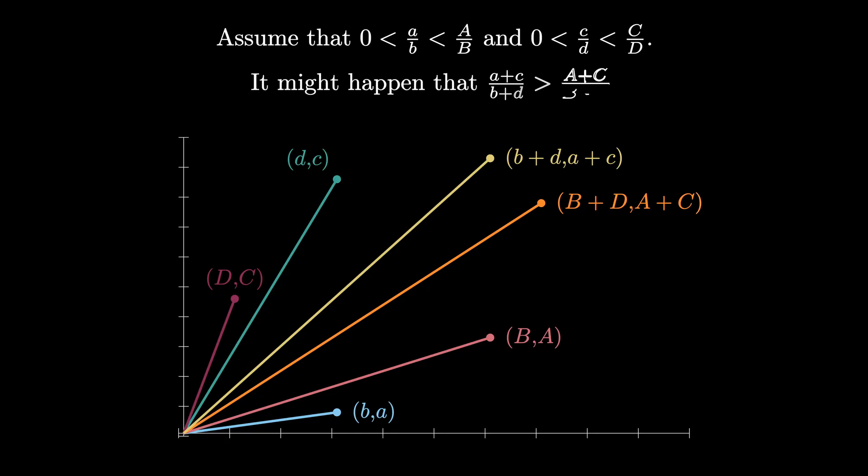This means that it's possible for (a+c)/(b+d) to be greater than (A+C)/(B+D), even though the individual pairs of fractions were bounded the other way. This is how we can get paradoxical seeming behavior.